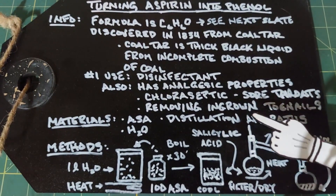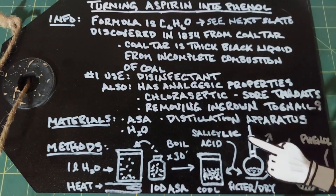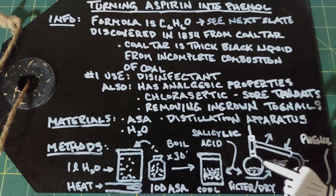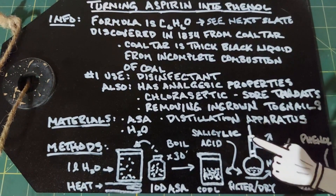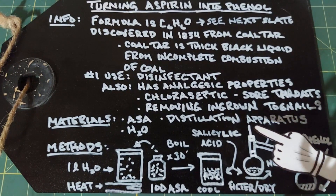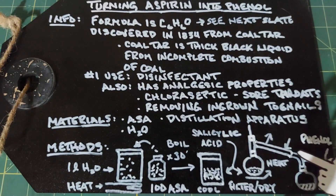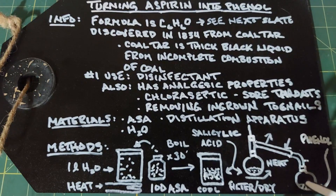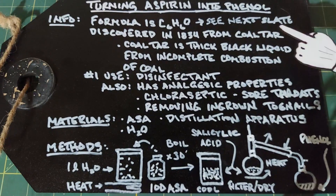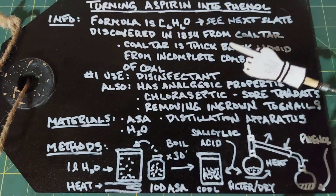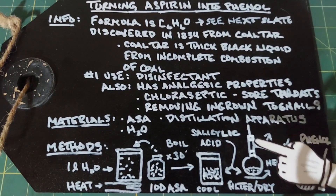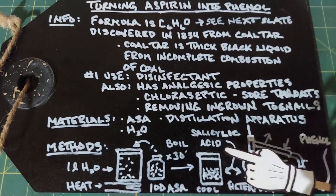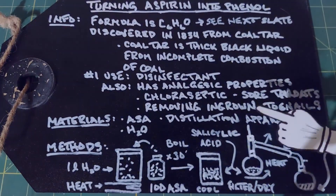Once your salicylic acid is dry, put it into your distillation apparatus in the flask and heat it — get it really hot. Somewhere between 150 and 200 degrees Celsius, the phenol will start to come over and drip into your round-bottom flask on the other side, and there's your end product. When you think about it, we're just boiling aspirin and then distilling the product, so overall the method is actually pretty simple.